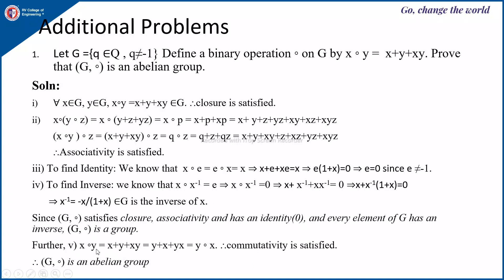Further, x∘y = x + y + xy = y + x + yx = y∘x. Therefore, commutativity is also satisfied, so (G, ∘) is an abelian group.